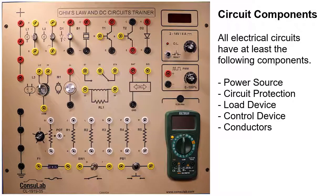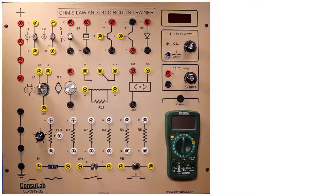Each circuit has at least the following components: a power source, circuit protection device, load device, control device, and conductors. Now let's take a look at these components on the actual trainer board.